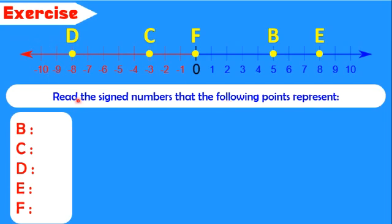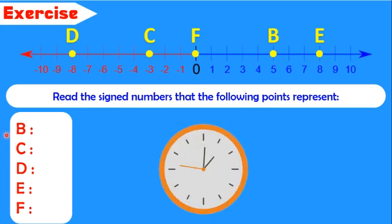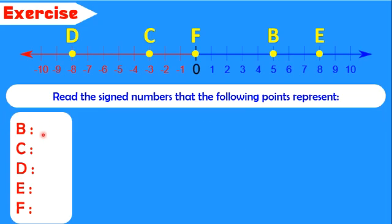Let's do an exercise. We have to read the signed numbers or the abscissa that the following points represent. Points D, C, F, B, and E are located on this numbered line, so we have to find the abscissa of each point. Point B is located on plus 5, so the abscissa of B is plus 5. Point C is located on minus 3, so the abscissa of C is minus 3. D minus 8, E plus 8, and F is on zero, so the abscissa of F is zero.